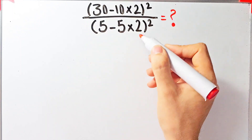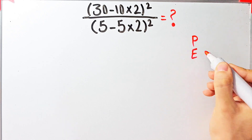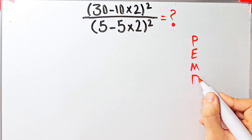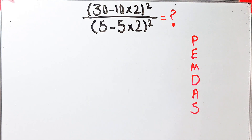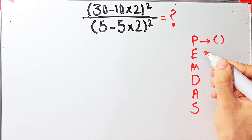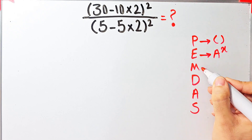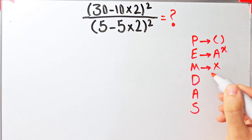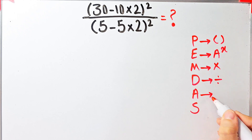To solve this question we need to follow the PEMDAS rule. PEMDAS shows the priority of mathematical operations, and if you don't pay attention to this rule you get the wrong answer. P stands for parentheses, E stands for exponent, M stands for multiplication, D stands for division, A stands for addition, and S stands for subtraction.